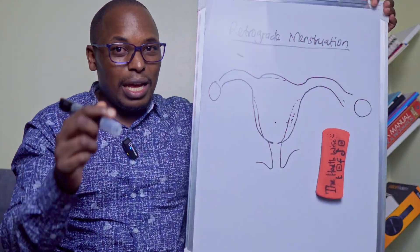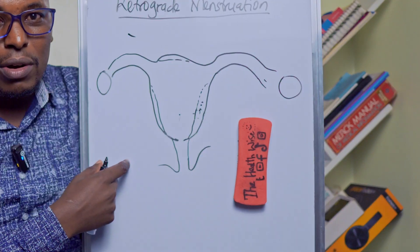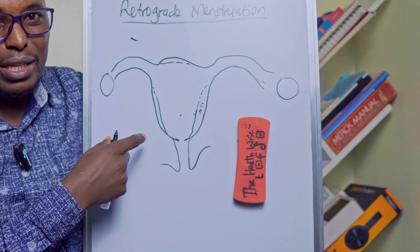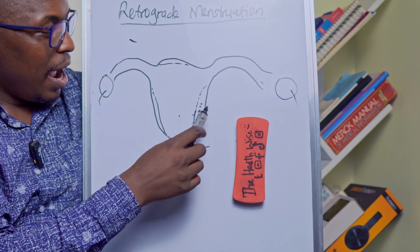Now this is a female reproductive organ. I'm not the best when it comes to drawing but at least you have an idea. These are the ovaries and then we have the fallopian tube called the oviduct.